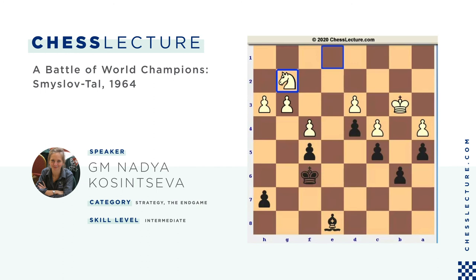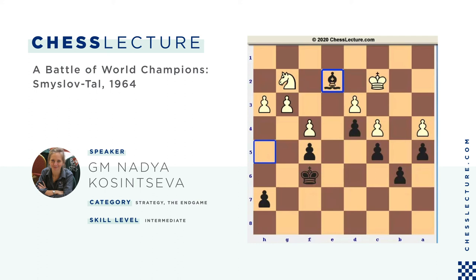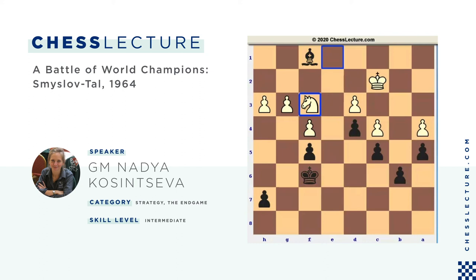In the game, white played Ng2 instead of Ne5. Bh5, Kc2, Be2 — black follows his plan; the bishop is heading to f1. White proceeded with Ne1, Bf1, then Nf3. As we could see earlier, h4 does not help much — black could move the king toward g4 and attack the g3 pawn. So white tries to bring the knight to g5.